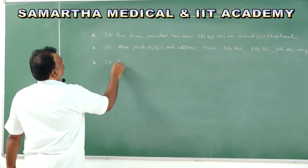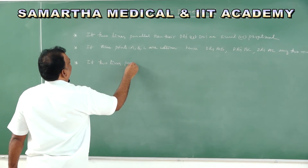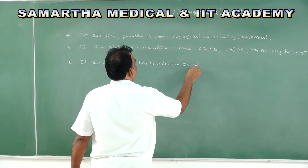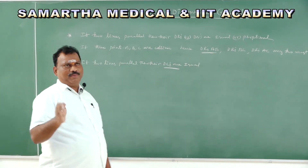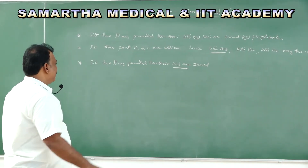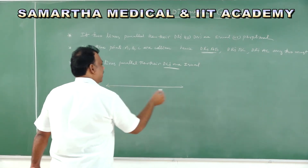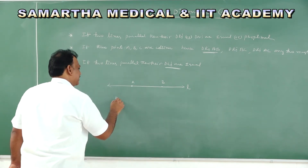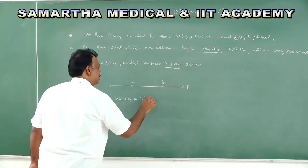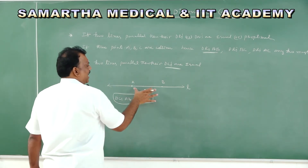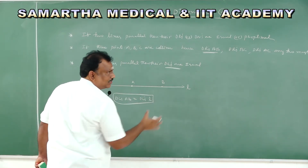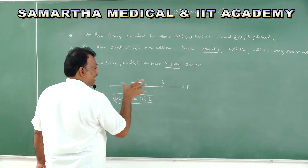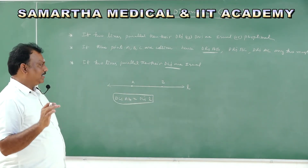If two lines are parallel, their direction cosines are equal. Don't confuse: direction ratios may be equal or proportional, but direction cosines must be equal. If you take any two points A, B on line L, the direction cosines of AB equal the direction cosines of L. Direction ratios of AB are also equal to or proportional to those of L.